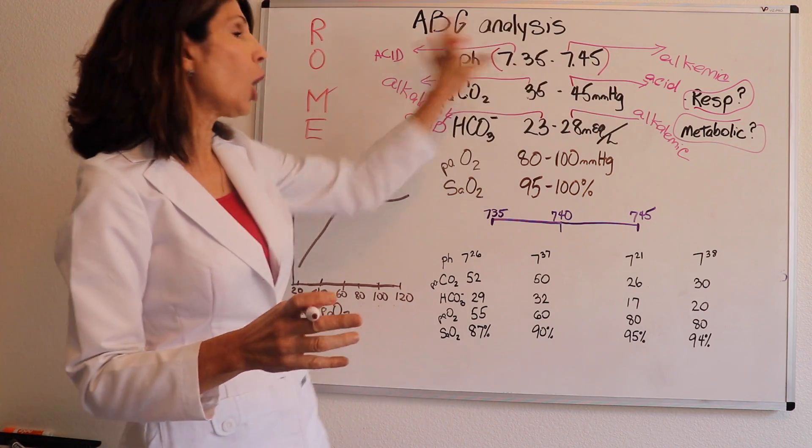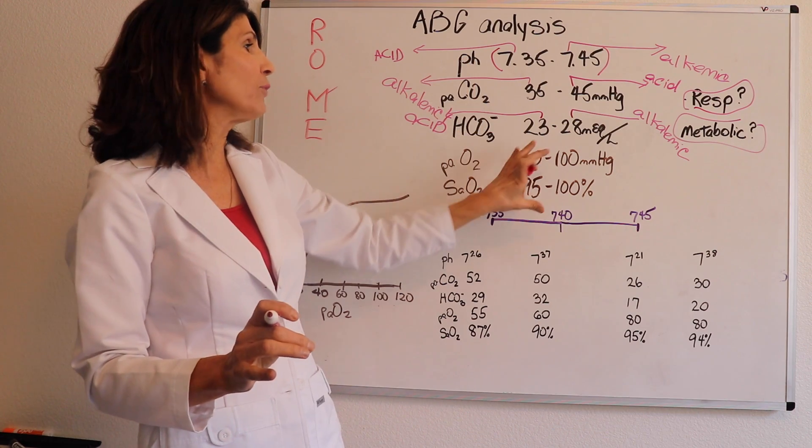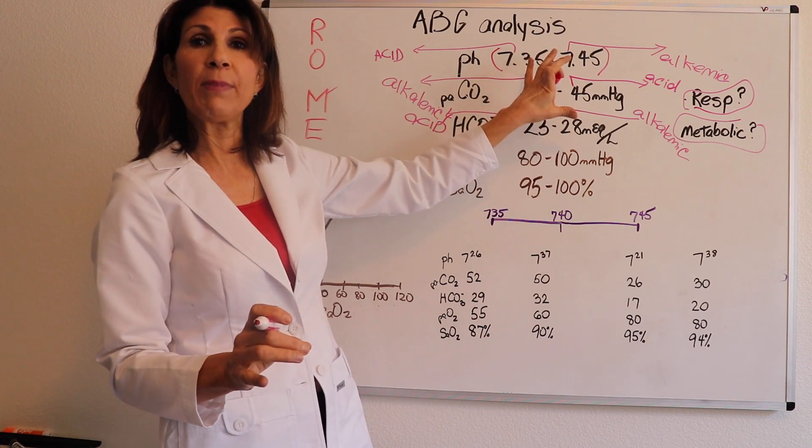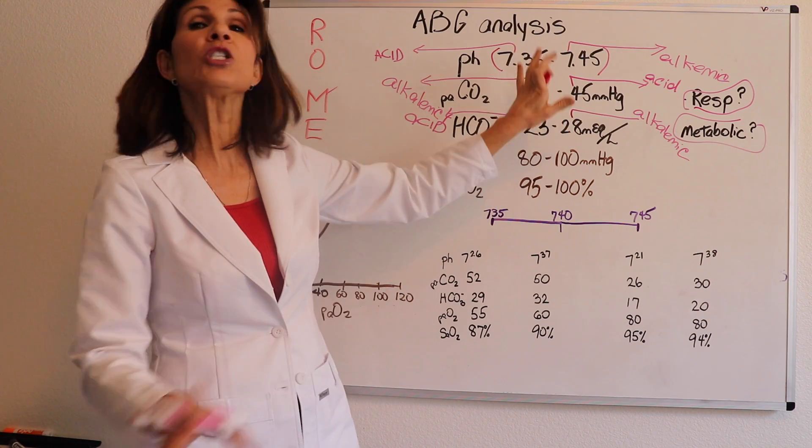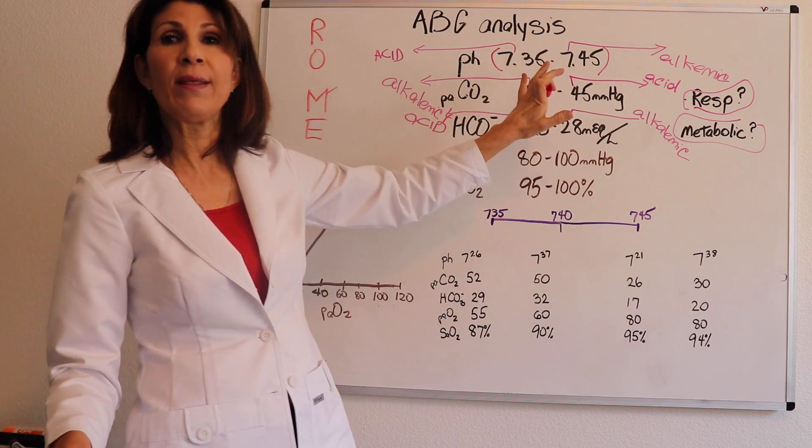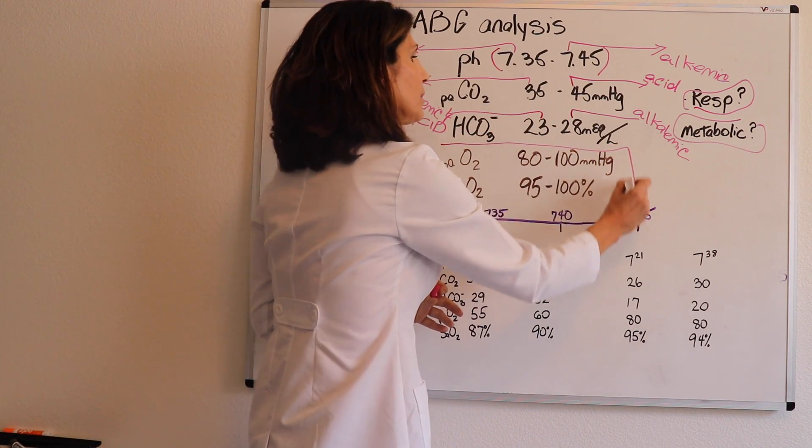Well, we pretty much talked all about acid-base balance. Almost. There's a little bit of an influence of oxygenation on acid-base balance, but of the two reasons to do an arterial blood gas, we just talked about one of the two. So we're halfway there. Second reason is we want to look at oxygenation.